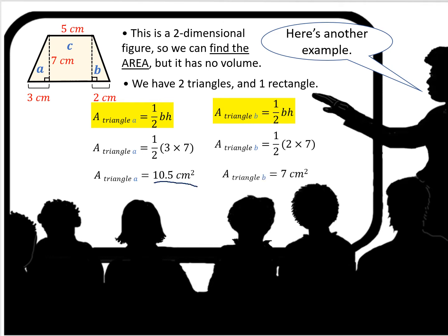Now we find the area of the second triangle, triangle B. Using the same formula — one-half base times height — the area is one-half of 2 times 7. Two times 7 is 14, and half of that is 7. Remember that the units for area are in square units, so it would be 7 centimeters squared.